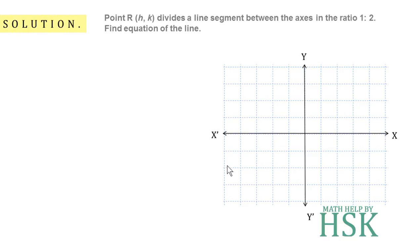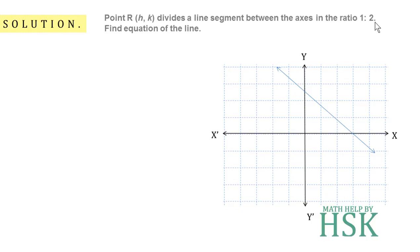We take the coordinate axes and draw a line. This point h,k is such that it is dividing the segment between the axes in the ratio 1 is to 2. This portion is divided by this point in the ratio 1 is to 2, and by default we take the ratio 1 towards the x-axis and 2 towards the y-axis.